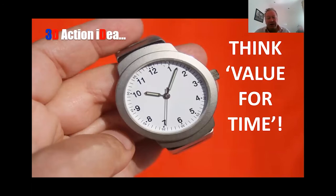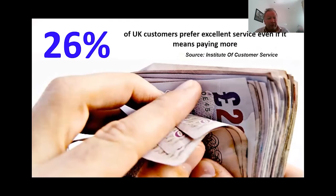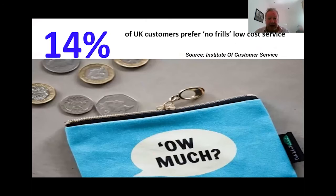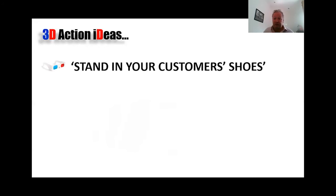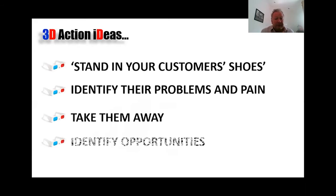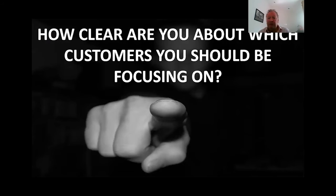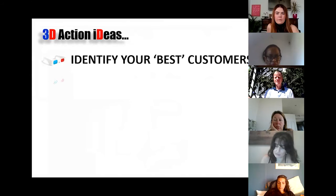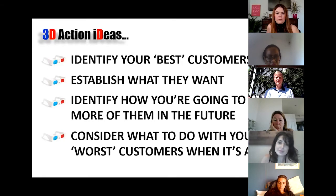We found we were putting as much time into the B clients as the profitable ones. We identified A's and C's were right for us and created a different plan for each. One way of looking at this is 'value for time' — not just how much they spend with you, but how much time, effort, and resources it costs you to service them. Some customers will happily pay more for better service, some want the balance, some don't. Work out who your best customers are and spend time establishing what they want, what they need, and how to get more of them.